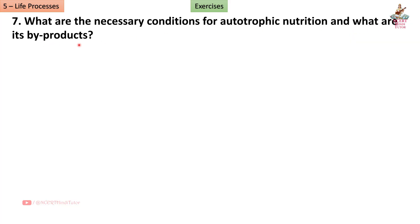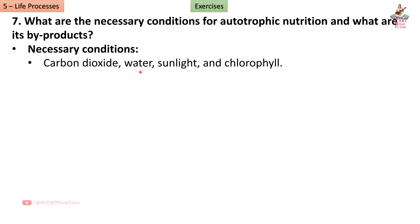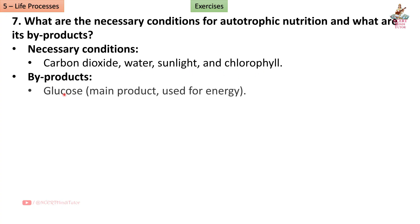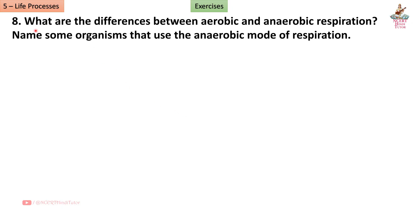Question 7: What are the necessary conditions for autotrophic nutrition and what are its by-products? Answer: Necessary conditions — carbon dioxide, water, sunlight, and chlorophyll. By-products — glucose (the main product used for energy) and oxygen (released into the air).